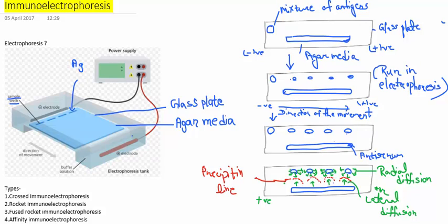Hello everyone, I am Suman. Today we are going to look at a topic that is immunoelectrophoresis. This is the last part of precipitation reaction, that is the antigen and antibody interactions. So let's discuss the immunoelectrophoresis.